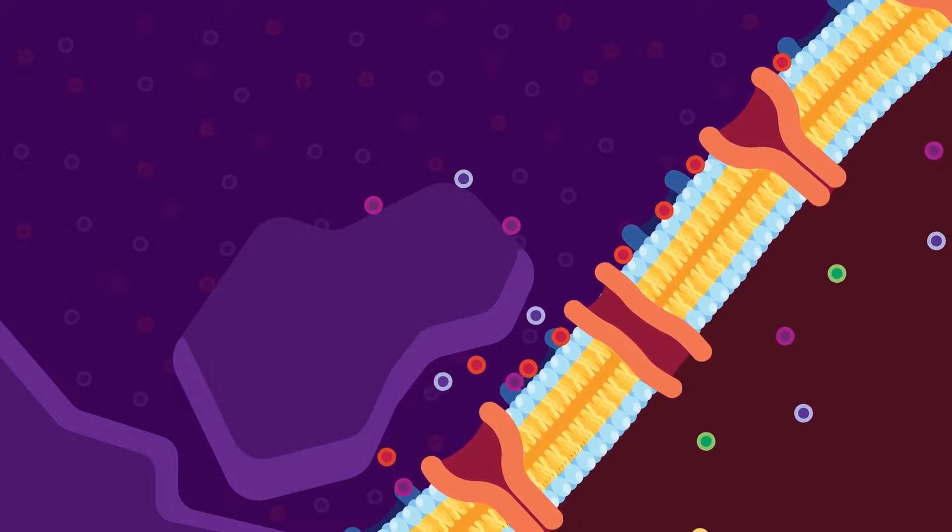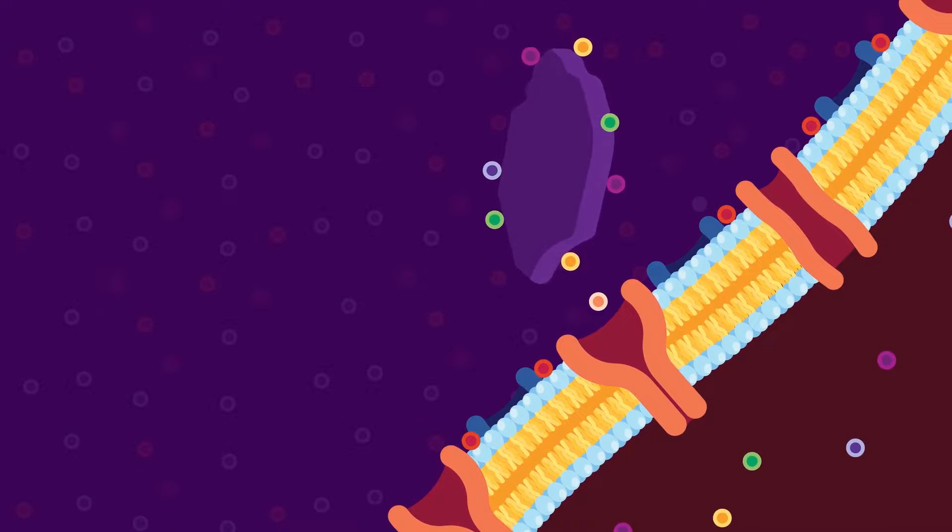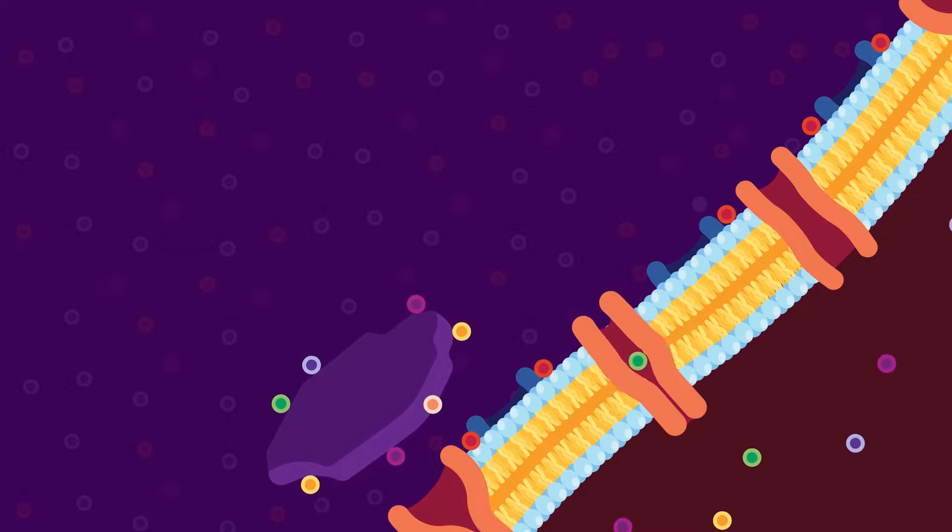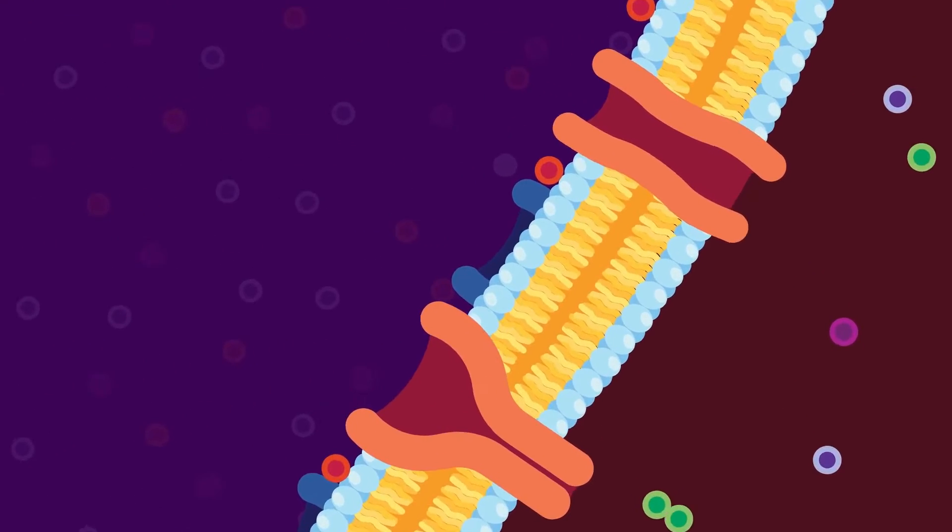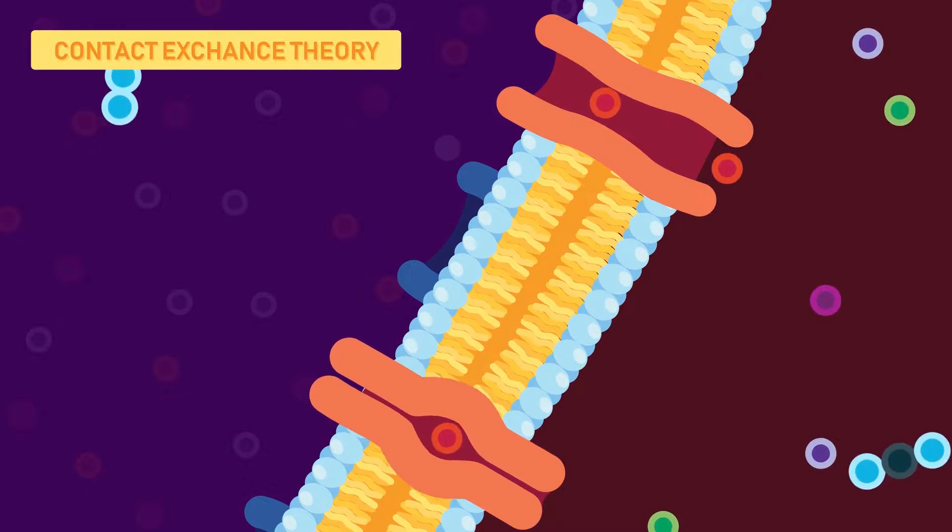Similarly, an anion like hydroxyl ion from the root cell can be exchanged with anion present in the soil. Ion exchange can be explained by contact exchange theory.